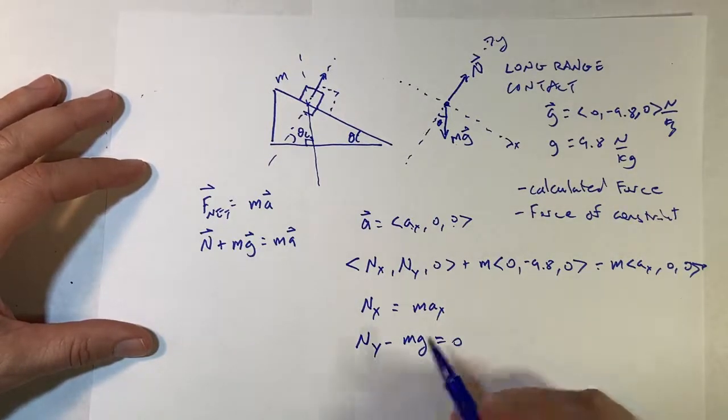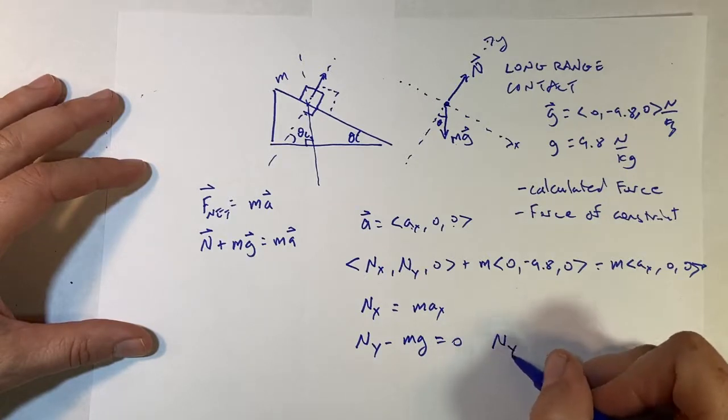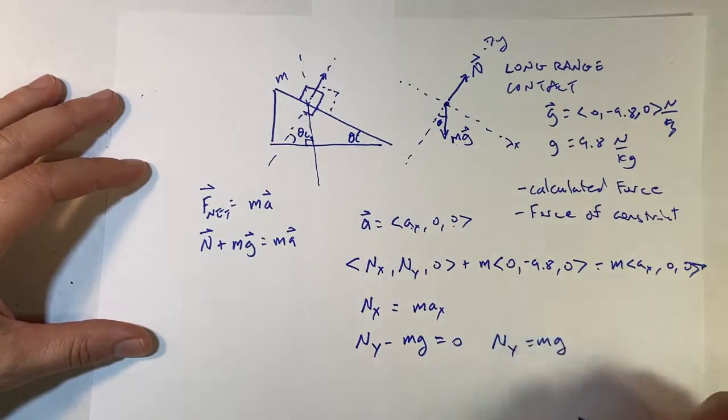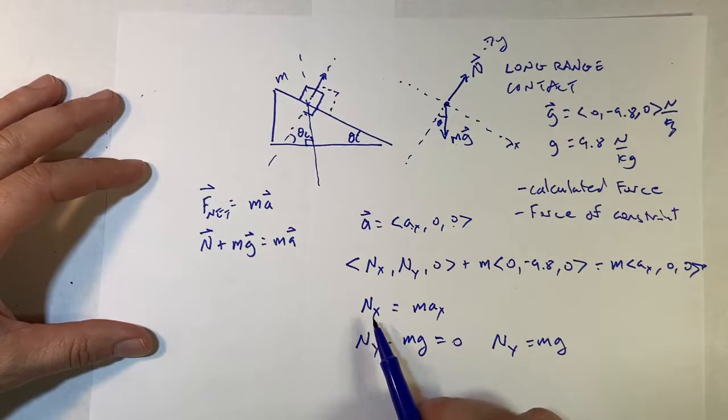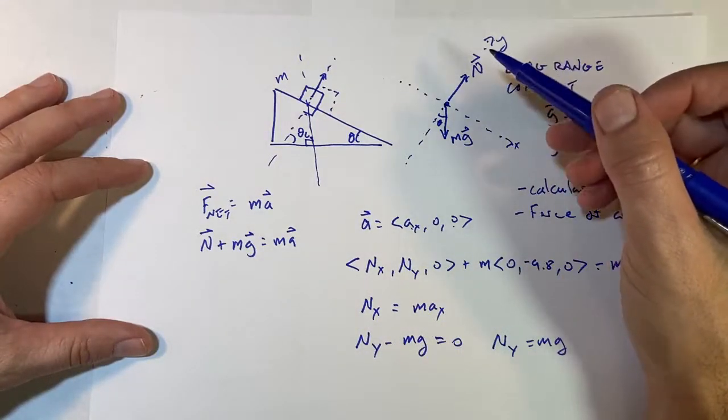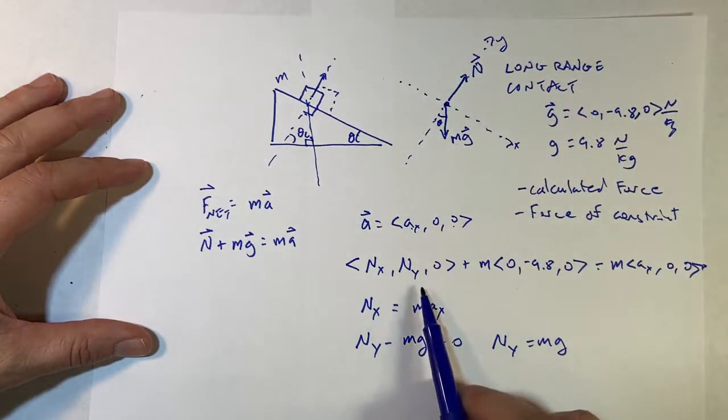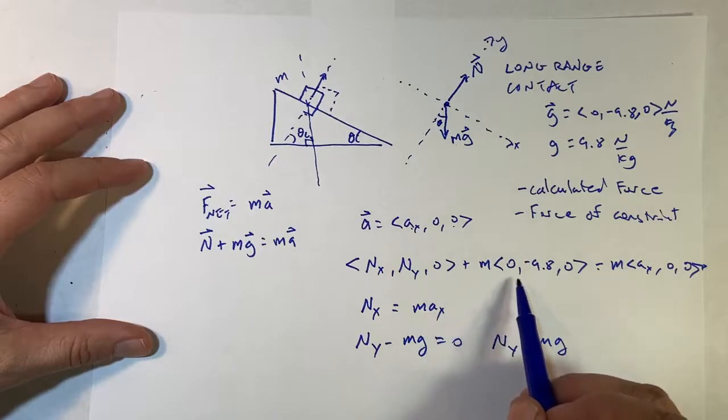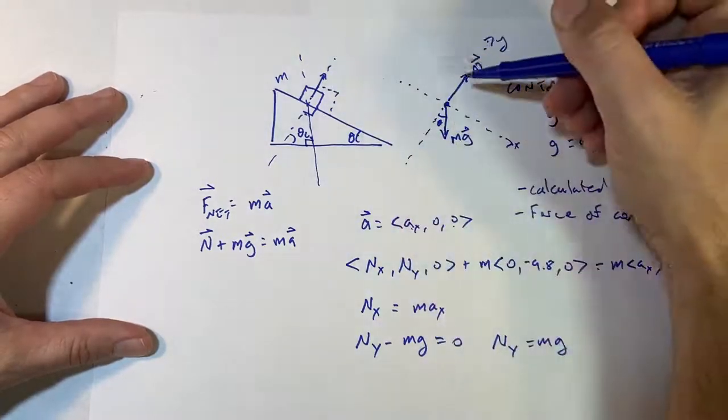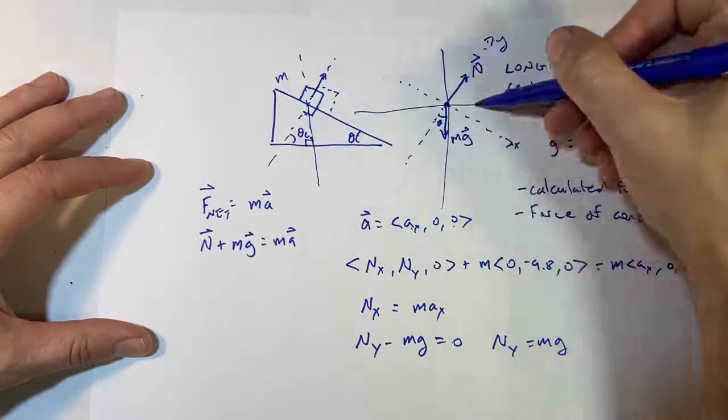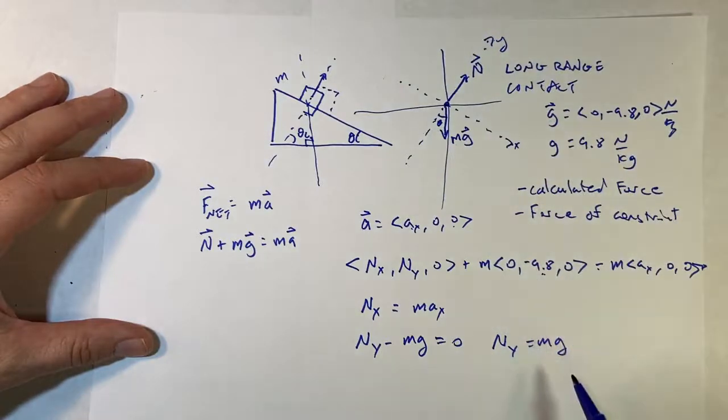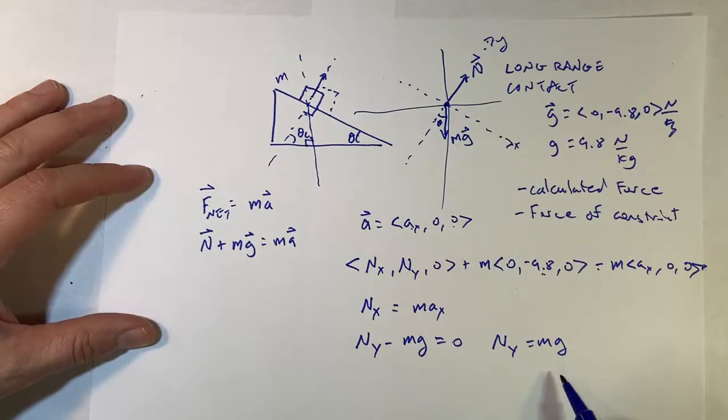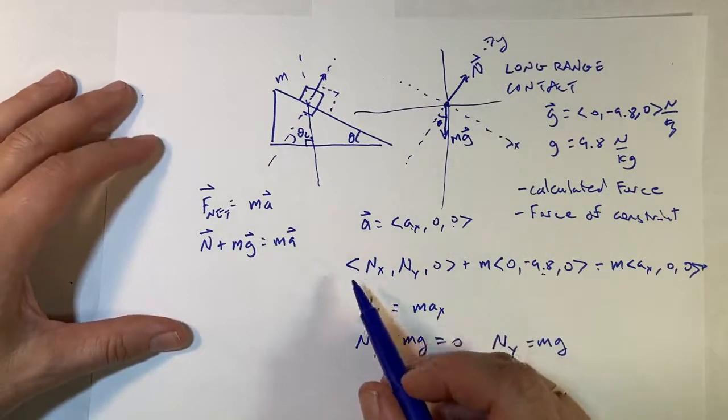And then if I write out the Y, I get NY minus MG, I'll just write it as G where that's 9.8 equals zero. So now I have NY. So I know NY is equal to MG. Now what about NX? Now there is one other thing I know about NX. Wait. Oh, I did this wrong. Yeah. I did this in the, I use this axis because I did that. Should I start over or just keep going? Let's fix it.